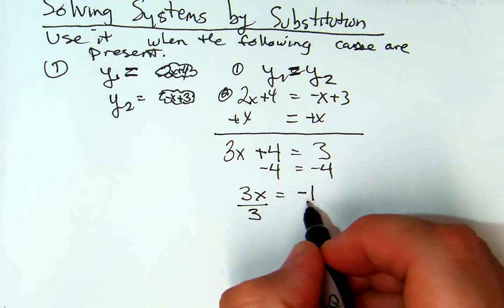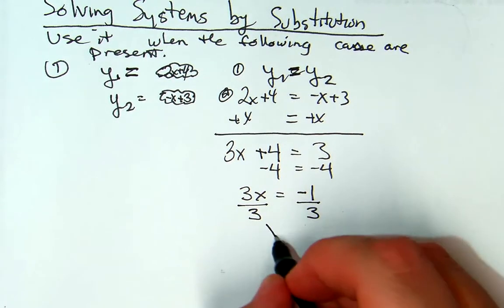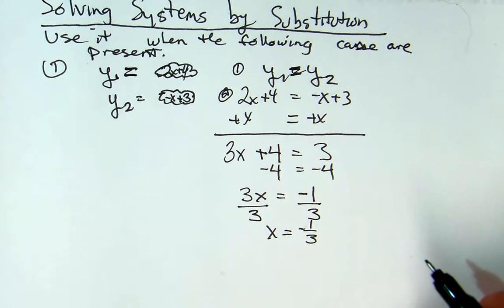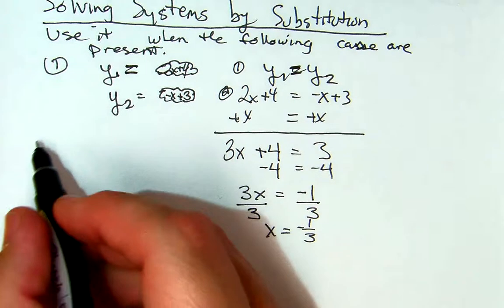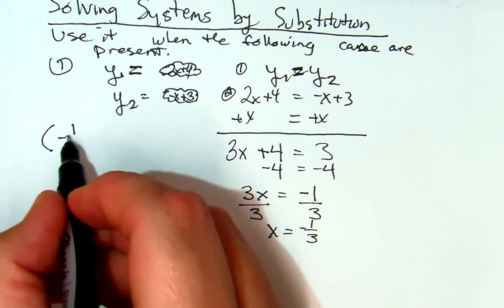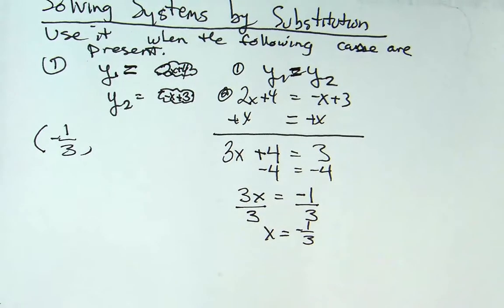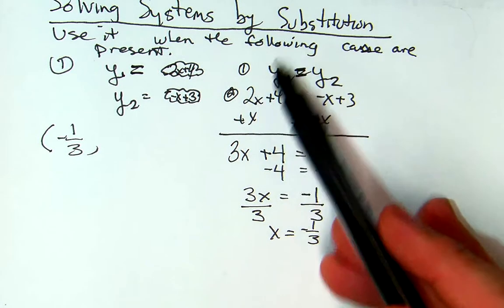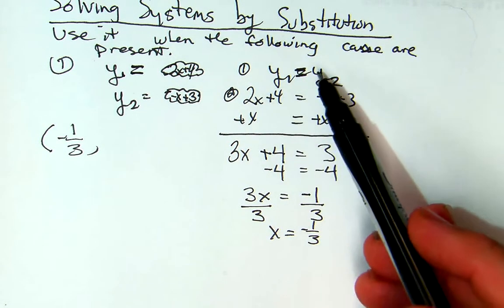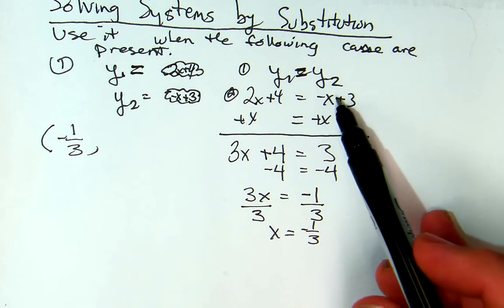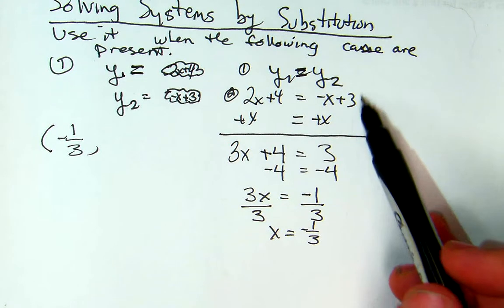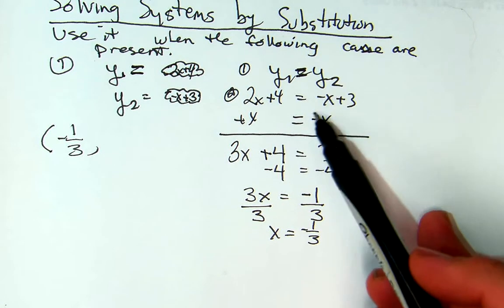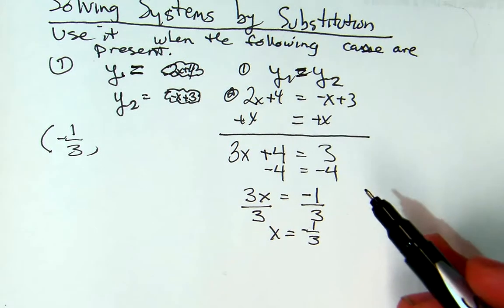Then I'll divide by 3 and get x is equal to negative 1 third. So I know my point is going to be negative 1 third comma something. So which equation do you think we're going to want to use? Are we going to want to use y equals 2x plus 4, or y equals negative x plus 3? Okay, let's use 2x plus 4.